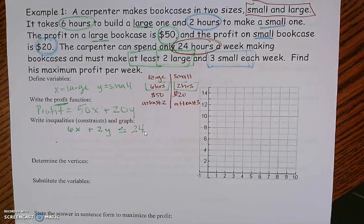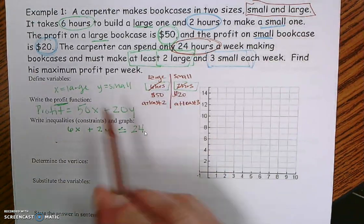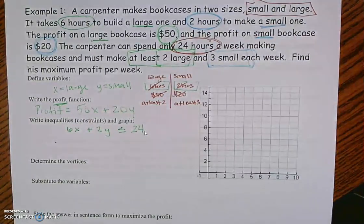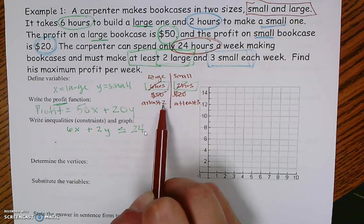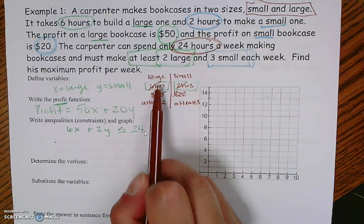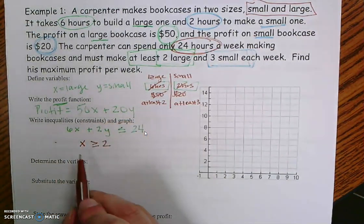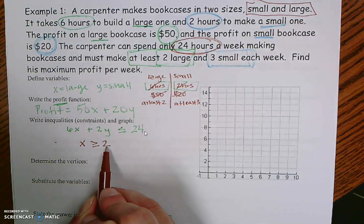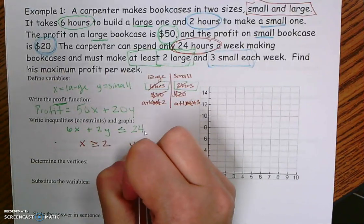All of those have to do with hours and making the bookshelf. I'll cross those out because I've already used them. Next: $50 and $20 go with money, and I've already used those in the profit function. Now I need to use 'at least two' and 'at least three.' If I'm making at least two large bookshelves, that means x is greater than or equal to 2. And y — the small bookcases — has to be greater than or equal to 3.